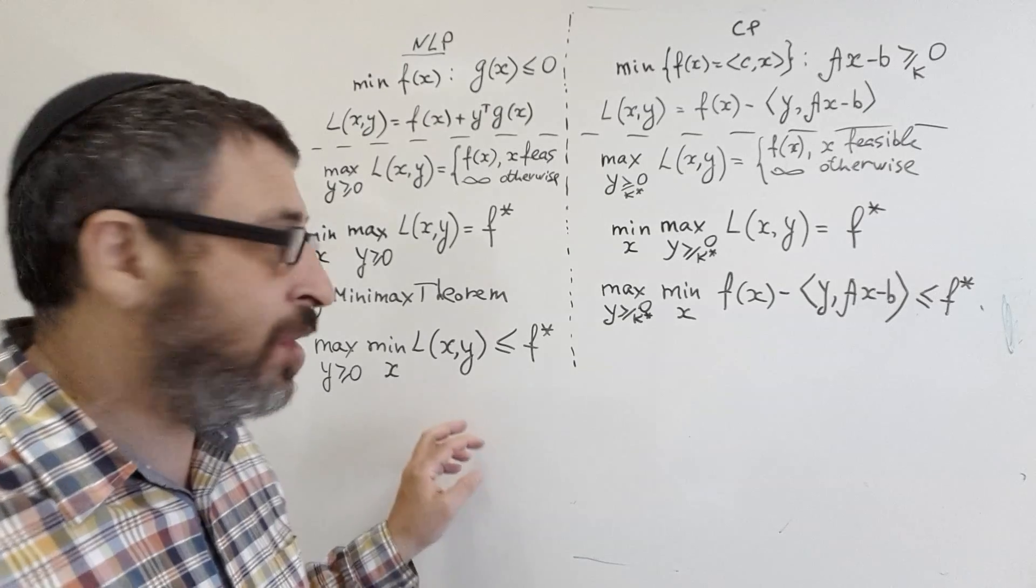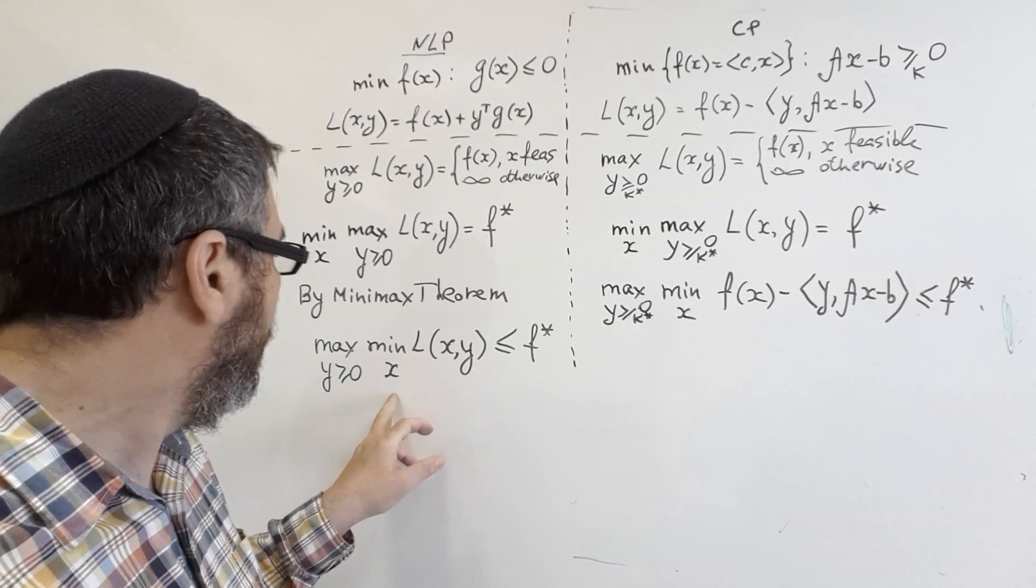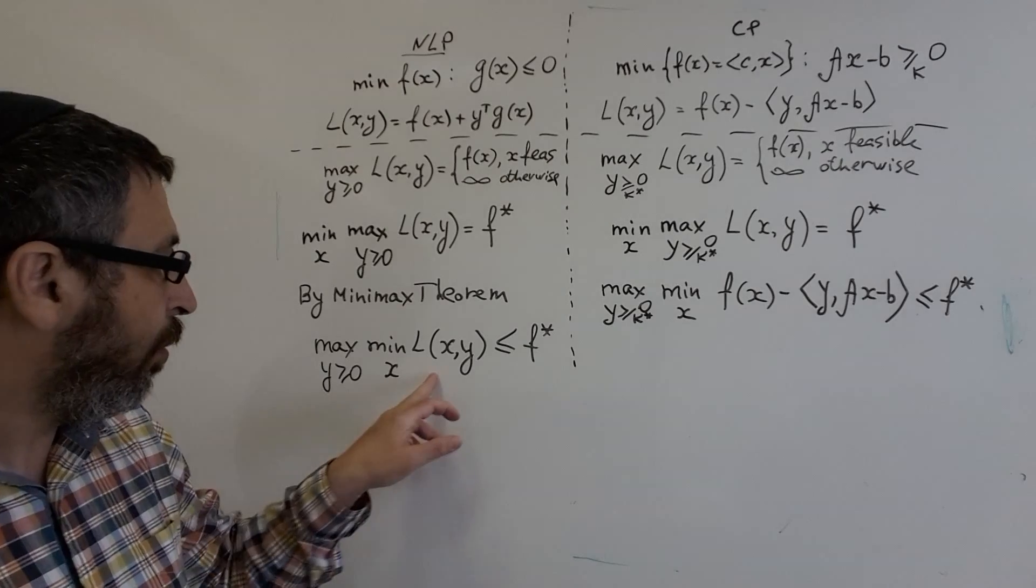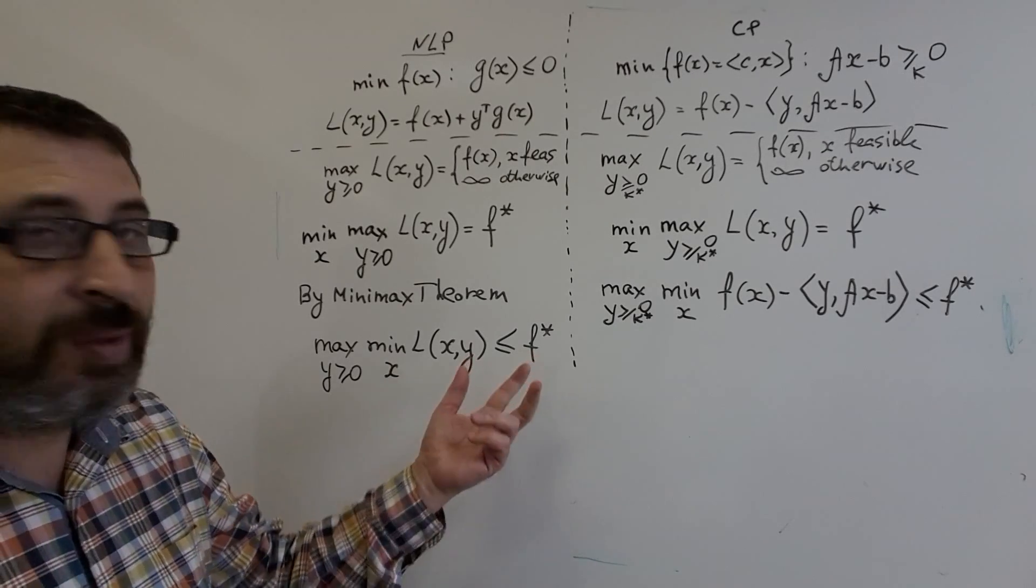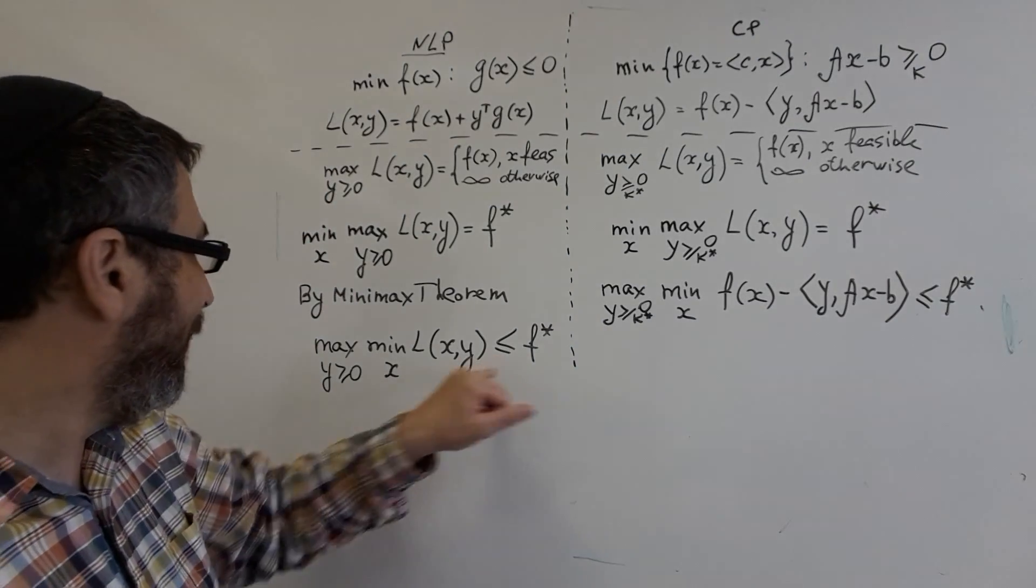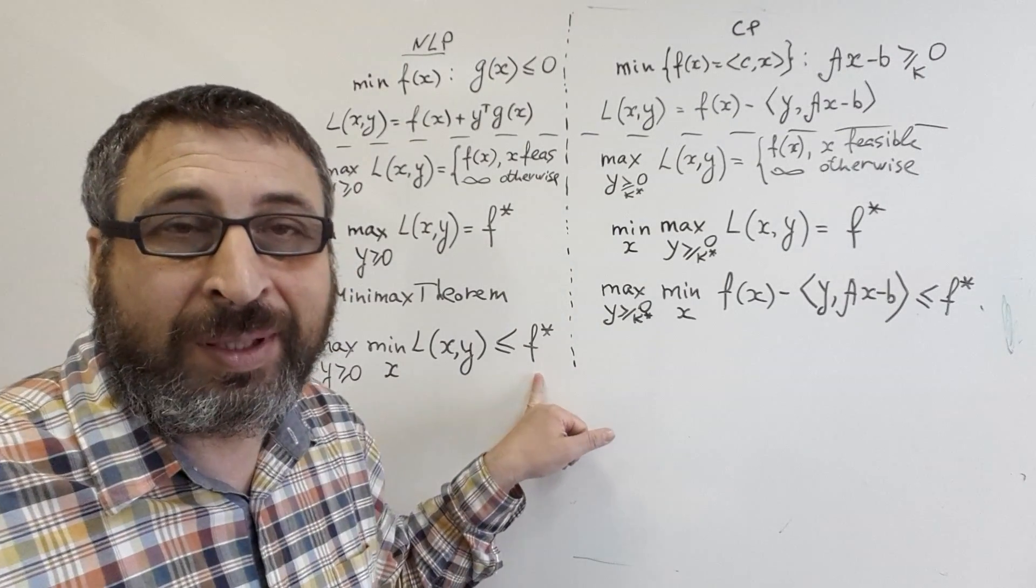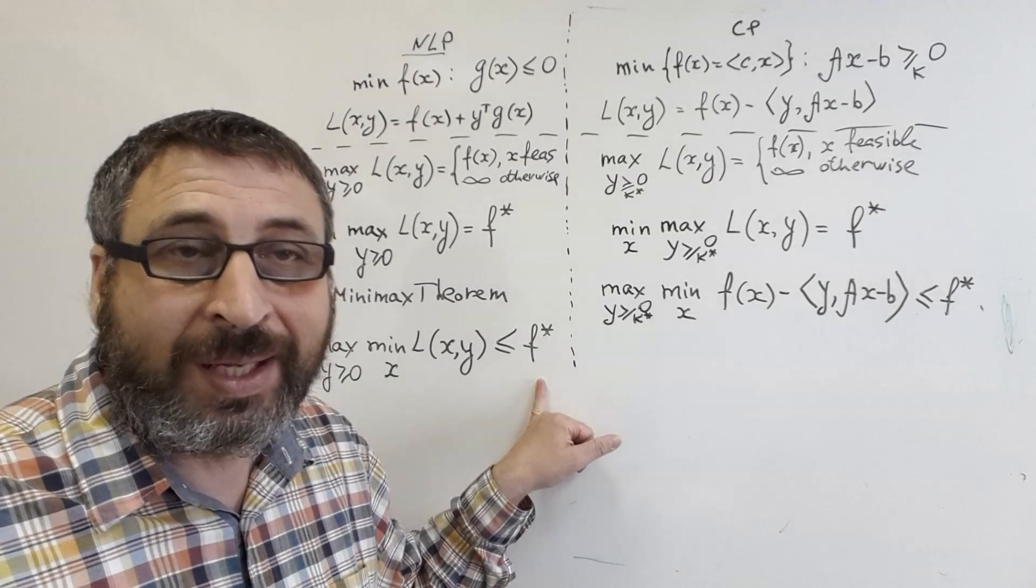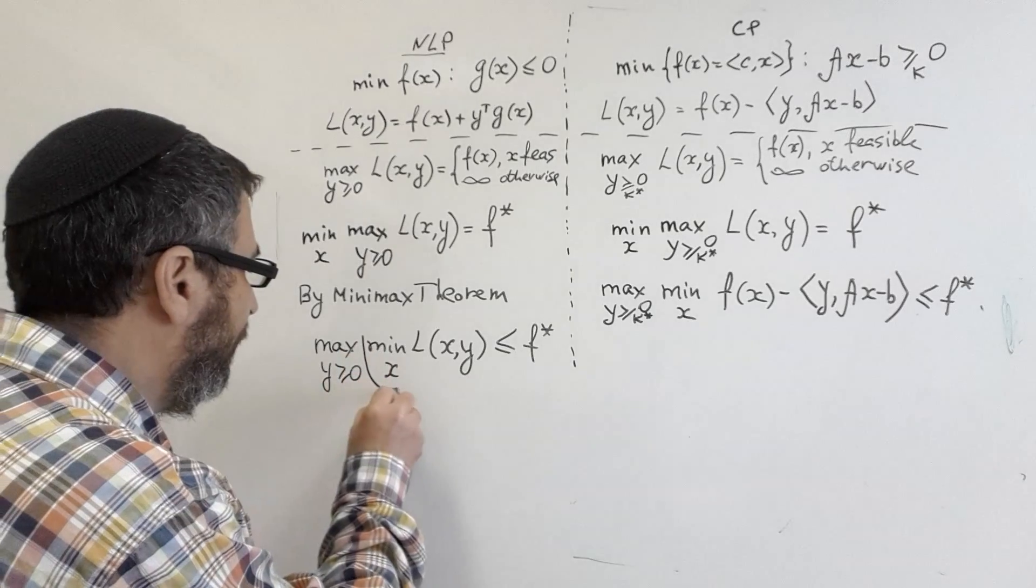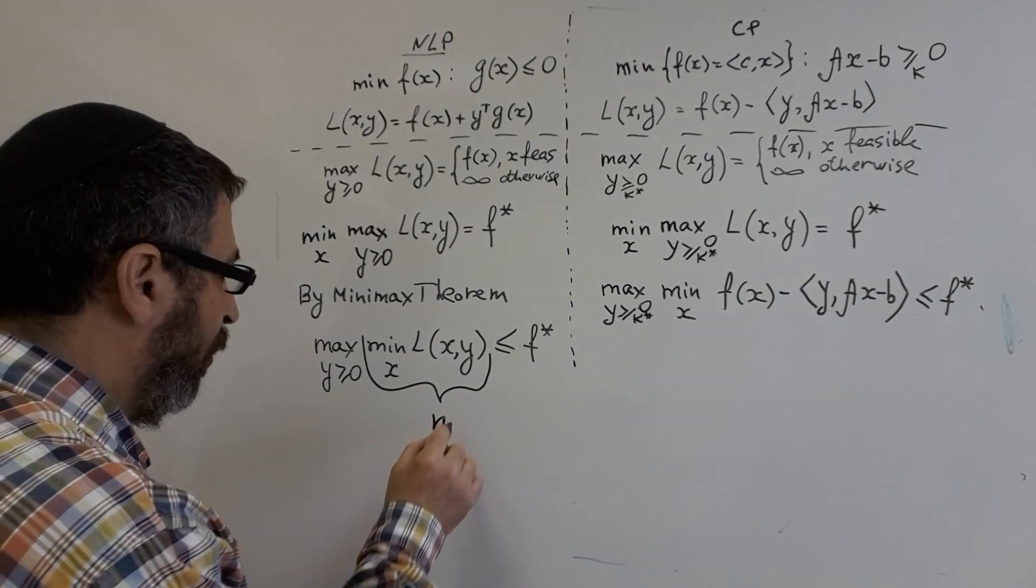And we know Minimax theorem which tells that if we swap order of max and min, namely we take max over Y, min over X of any function, then we only will decrease the resulting value. So it means that max min of Lagrangian is less or equal to optimal value of the primal problem.